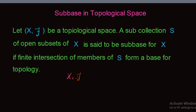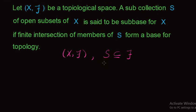That is, if we have a topological space X and S is a subset of tau consisting of open subsets of X, this sub-collection of open sets is said to be a sub-base for the topological space X if the finite intersection of members of S forms a base for tau. If finite intersection of members of S forms a base for tau, then we say that S is a sub-base for tau.